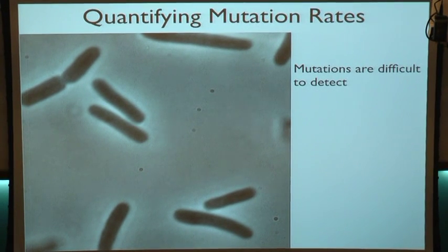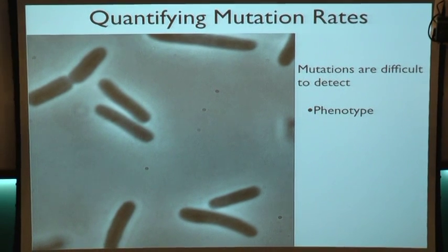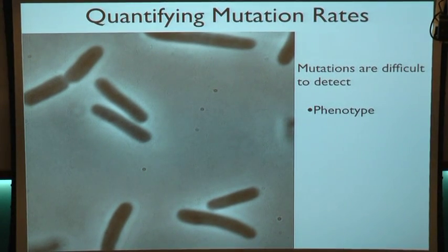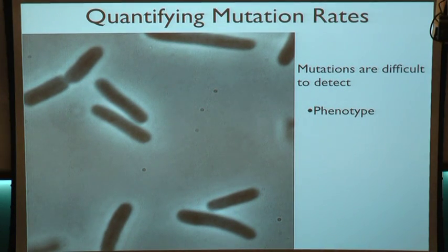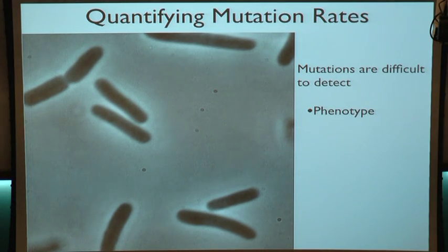So how do we detect mutations? Generally experimentally, the way we do this is as a result of changes in their phenotype. For example, when they undergo mutations, they can start to metabolize different sugars that are available in the environment, or maybe they'll become immune to some virus, or maybe it just affects their growth rate — we can put them under the microscope and measure how fast they grow, and determine whether or not they've had a mutation through how fast they grow.